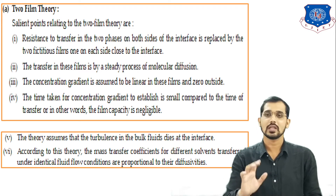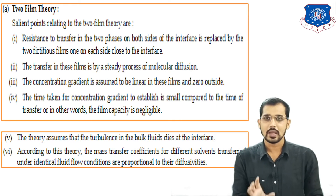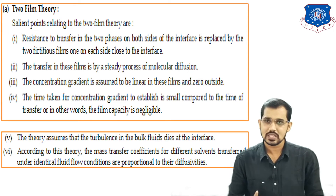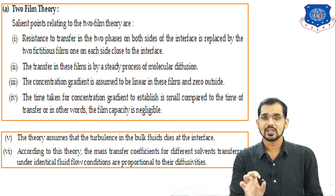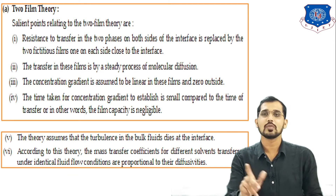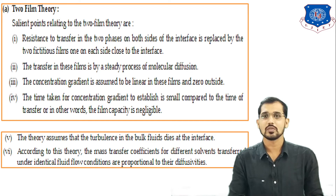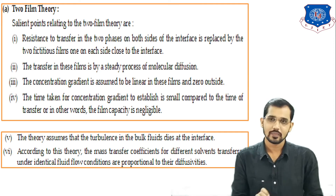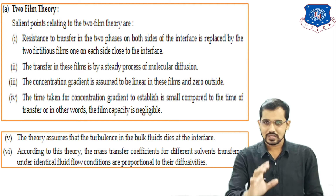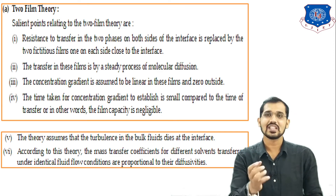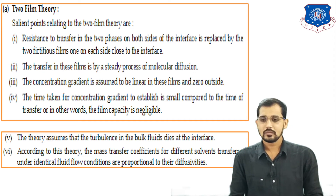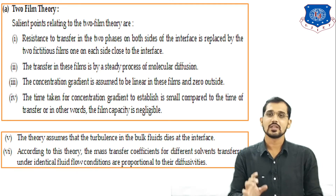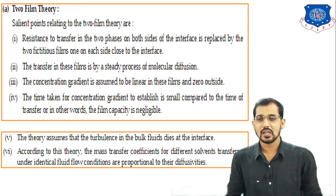These six points are very important for exam purposes: two films across the interface; steady-state process; linear concentration gradient in the film and zero outside; time to establish concentration gradient is small; turbulence dies at the interface; and mass transfer coefficient k is directly proportional to DAB.